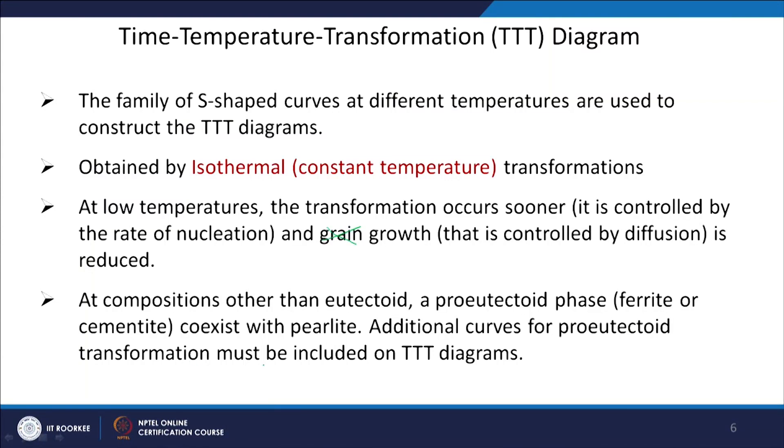If you are at a temperature below the equilibrium temperature where the phase is not stable, the nucleation rate will be high and the microstructure will be very fine. Growth is controlled by diffusion — it will initially increase and then decrease. At compositions other than eutectoid, a pro-eutectoid phase (ferrite or cementite) coexists with pearlite, so an additional curve for the pro-eutectoid transformation must be included on TTT diagrams.